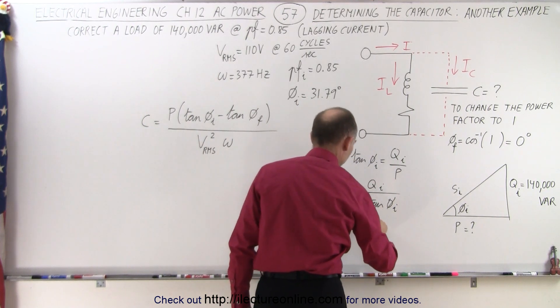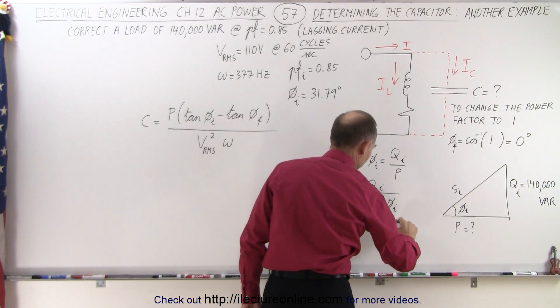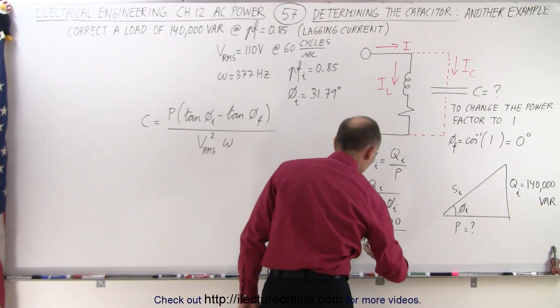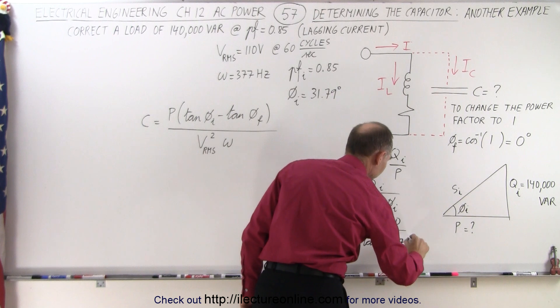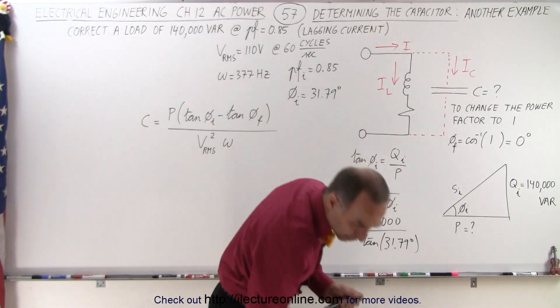So in this case, that's going to be equal to 140,000 divided by the tangent of the initial phase angle of 31.79 degrees. All right, so let's go ahead and do that.